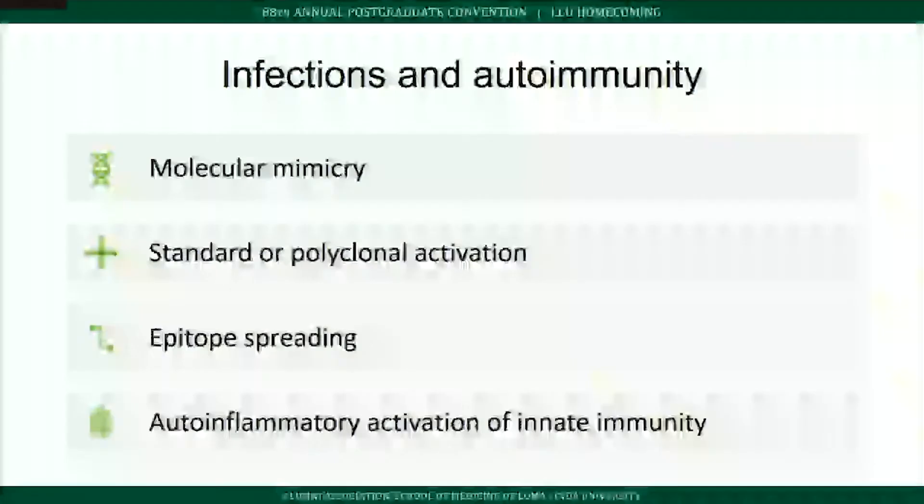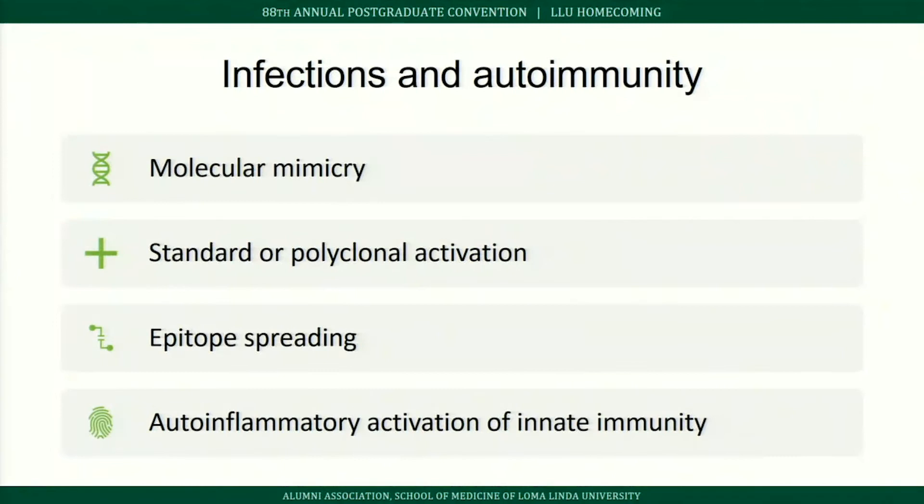Looking at infections and autoimmunity: mechanisms by which infections can trigger the immune system include molecular mimicry, bystander or polyclonal activation, epitope spreading, and autoinflammatory activation of the innate immune system.